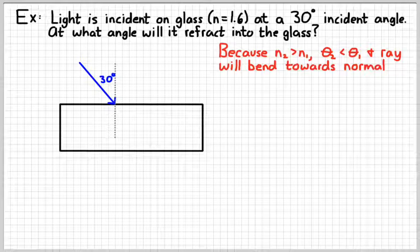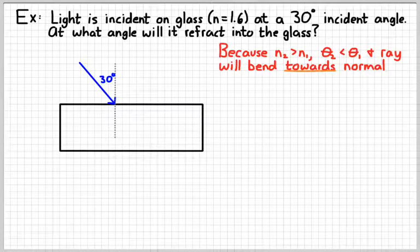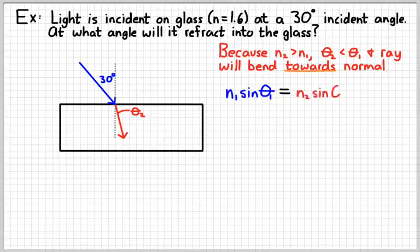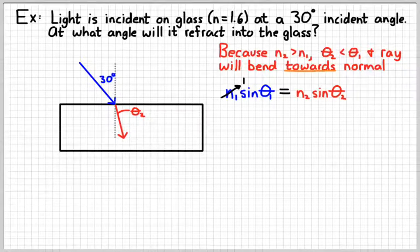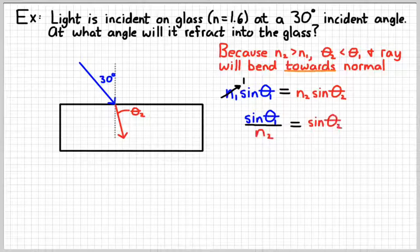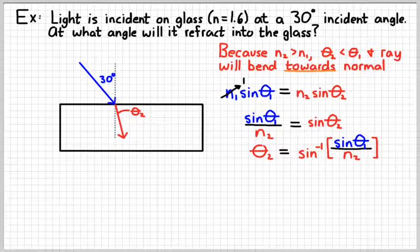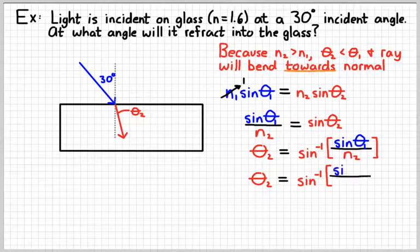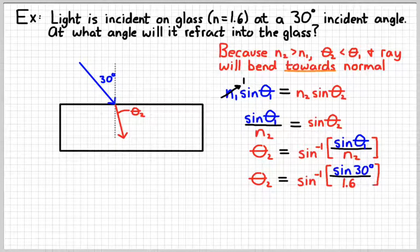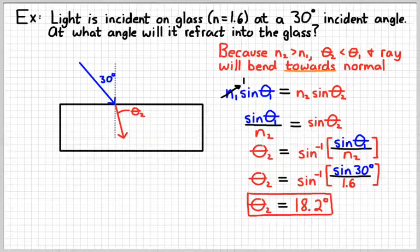So whichever index of refraction is bigger is going to have a smaller angle. So I know that the ray is going to bend towards the normal. So I can draw it like that, and then theta two would be between the dashed line and the red arrow. So applying Snell's law, I know that the index of refraction in air is about 1. So I can do that. And then solving for theta two, I'd divide both sides by n2, and then do the inverse sine of both sides to get theta two. And so it looks something like that, and you'd get an angle of about 18.2 degrees.